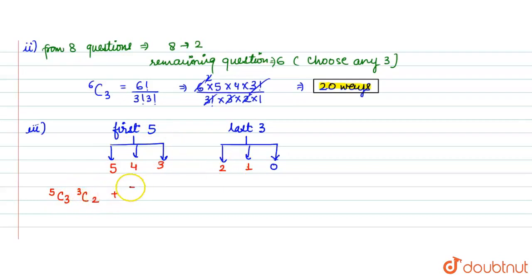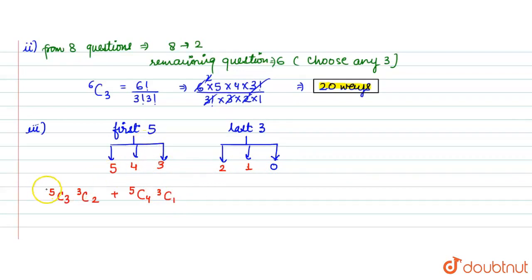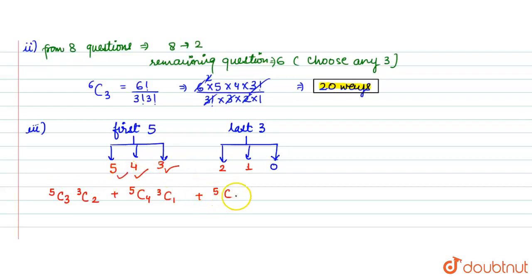The second combination is choosing 4 from the first 5: 5C4, and then 1 from the remaining 3: 3C1. The third combination is choosing all 5 from the first 5: 5C5, and then 0 from the remaining 3: 3C0.